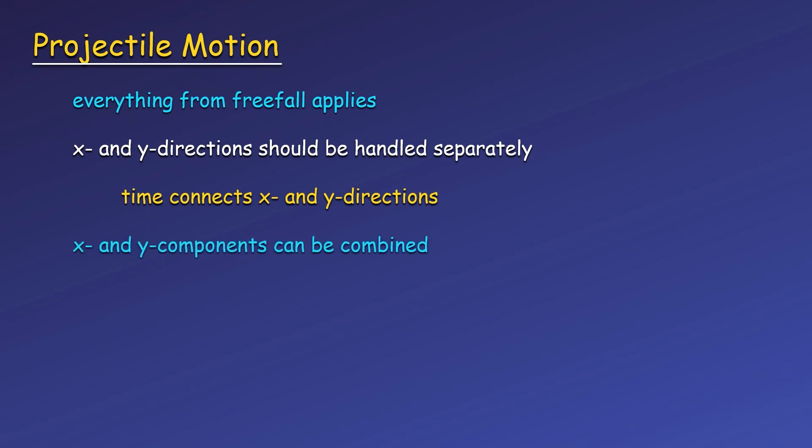Finally, if we want to find the overall magnitude of velocity or speed at some point along the path, or the direction the projectile is moving at any given point along its trajectory, we need to combine the x and y components using the Pythagorean theorem and inverse tangent. The x and y components are found using kinematic equations, and then we find the magnitude and direction of the overall vector just like we would with any other vector, once we have the components at the time we're interested in.